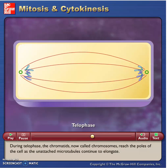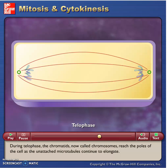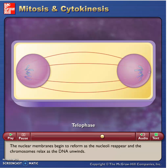During telophase, the chromatids, now called chromosomes, reach the poles of the cell as the unattached microtubules continue to elongate. The nuclear membranes begin to reform as the nucleoli reappear and the chromosomes relax as the DNA unwinds.